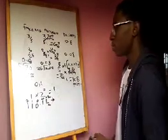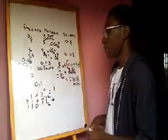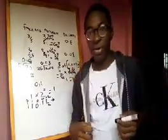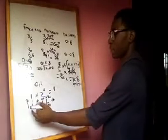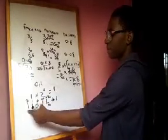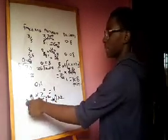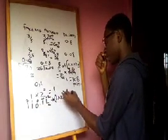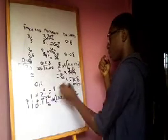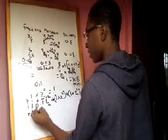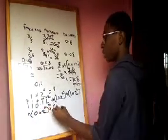Multiply each face value by the base two raised to the power of its place value. So: one times two squared, plus one times two to the power one, plus zero times two to the power zero, plus one times two to the power minus one, plus one times two to the power minus two.